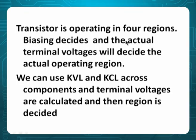Transistors operate in four regions. Biasing decides, and the actual terminal voltage decides the actual operating region. We can use KVL and KCL across components; terminal voltages are calculated and then the region is decided. What we supply may not always decide the region — it is the terminal voltage that decides, not the supply voltage. That's the important observation in this chapter. Always base your conclusion on terminal potential, not supply potential.